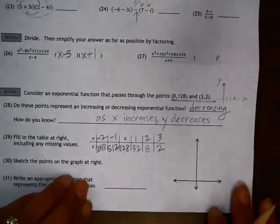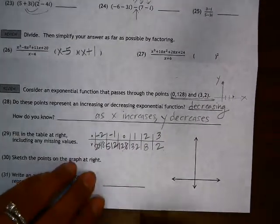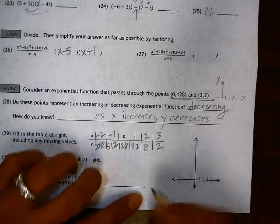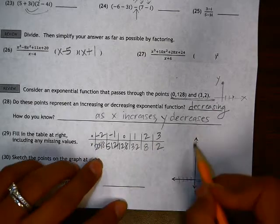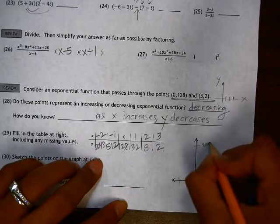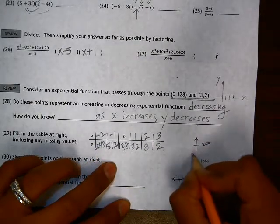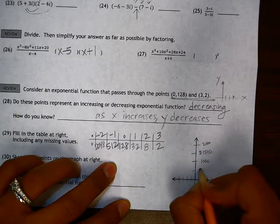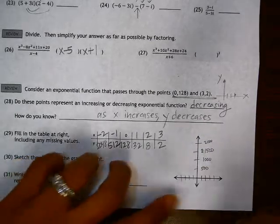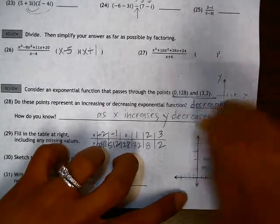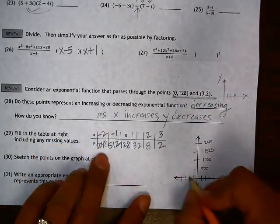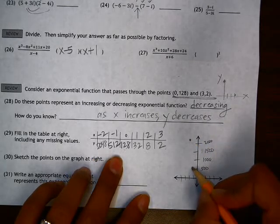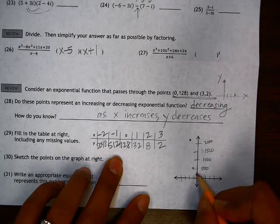If we were to sketch these points, so let's just do a quick sketch, we go all the way up to around 2,000. So I'm just going to scale this by 500s, 1,500 and then 500. So if we do a quick sketch, negative 2, 2048 would be about right there, negative 1, 512, 0, 128,